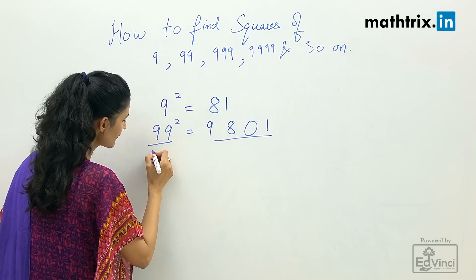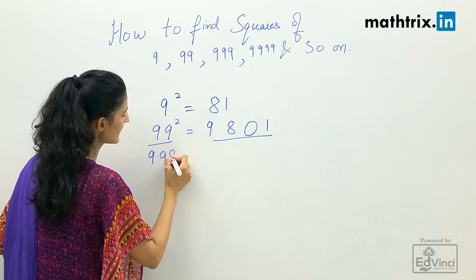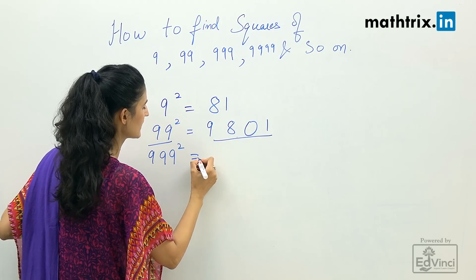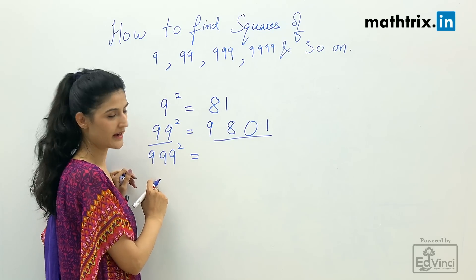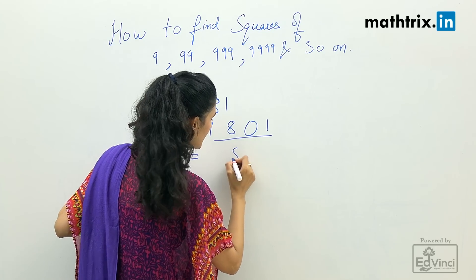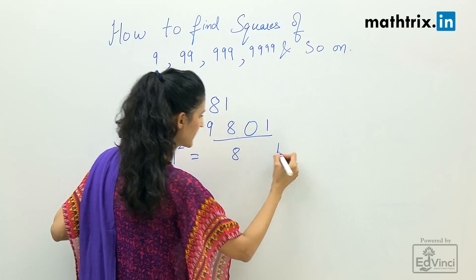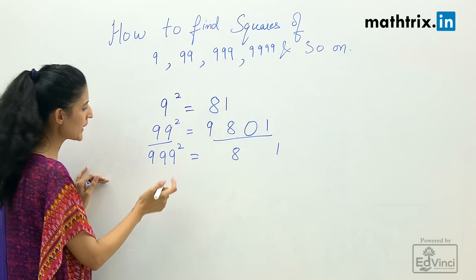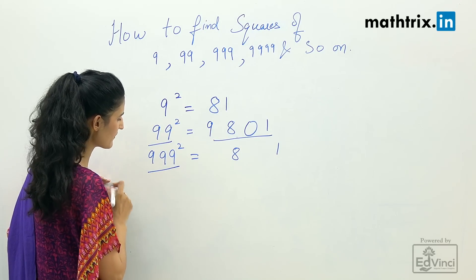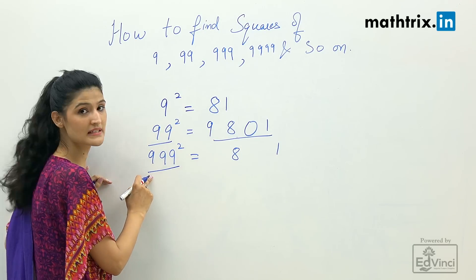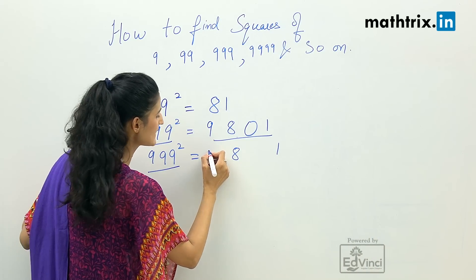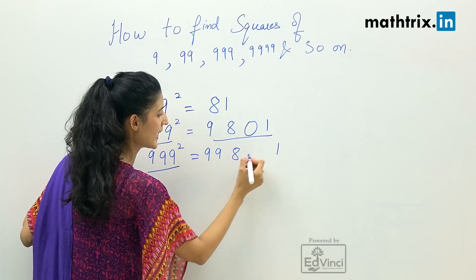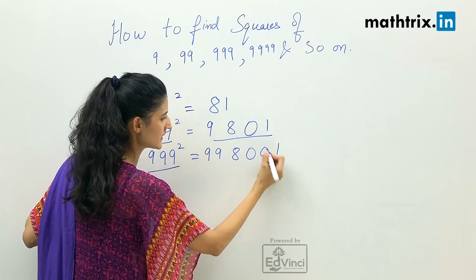Now let's move to 999 square. Rule number 1: it must contain 8 and 1, but we will write it separately, 8 here and 1 here. Rule number 2: we will see the count of 9s we have. The count of 9s here is 3, but we will take 1 less, so we will take 2 nines here and we will take 2 zeros here.